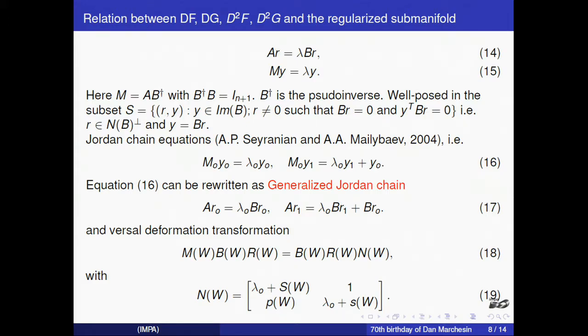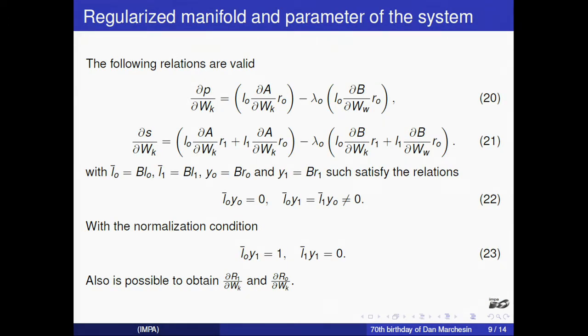Then for this matrix M, we can use the Jordan chain equation. We use the book of Seyranyan to this representation. And from this, that is valid for this matrix M, we have obtained the generalized Jordan chain, this equation. This equation, together with the versal deformation from this book of Seyranyan, we come to obtain the relationship between the eigenvectors and the Jacobian and Hessian. Then this is the relationship that we use in this construction.